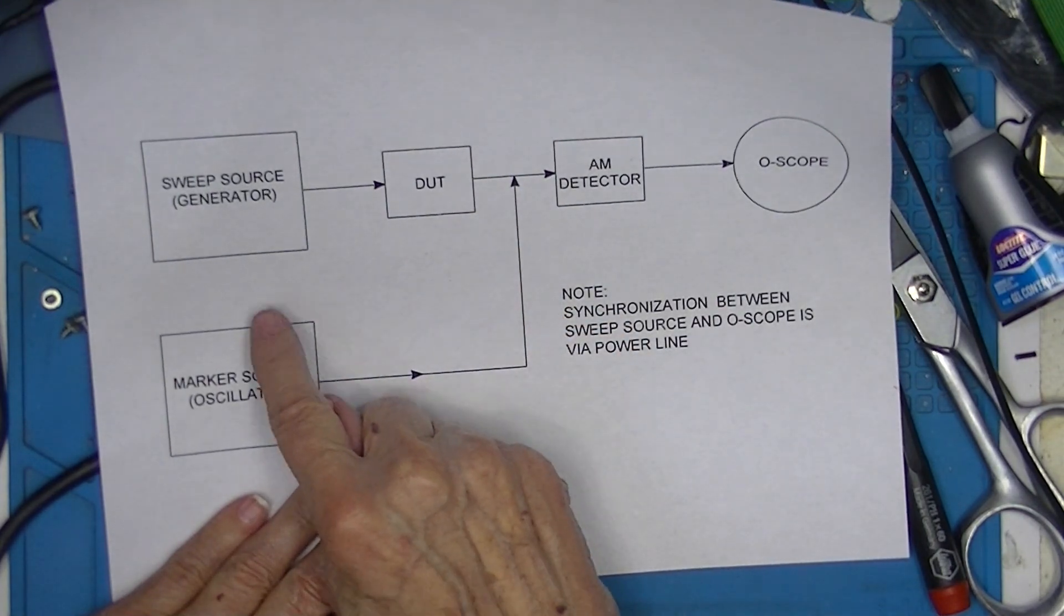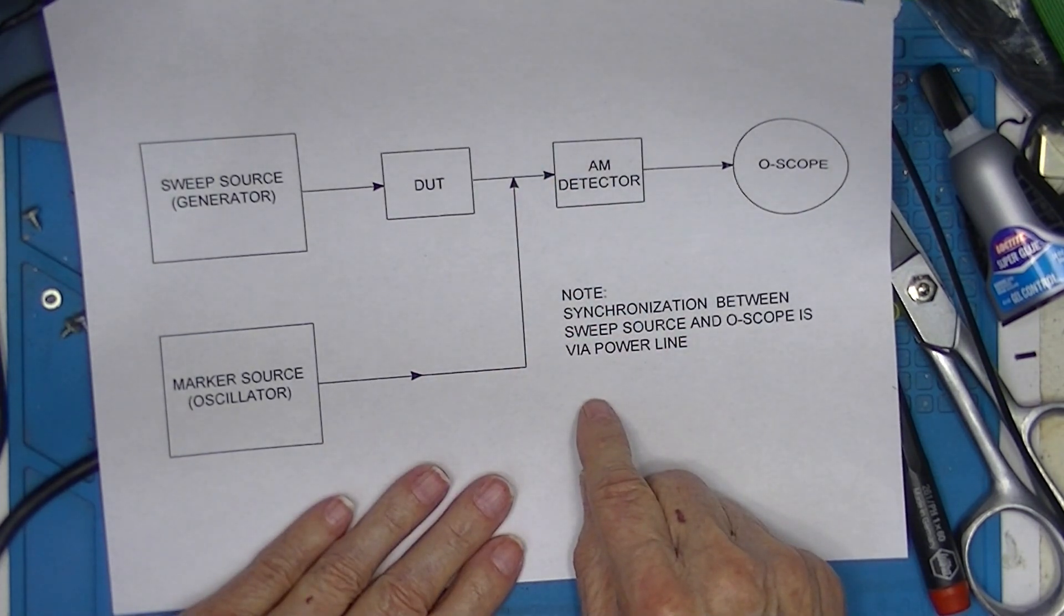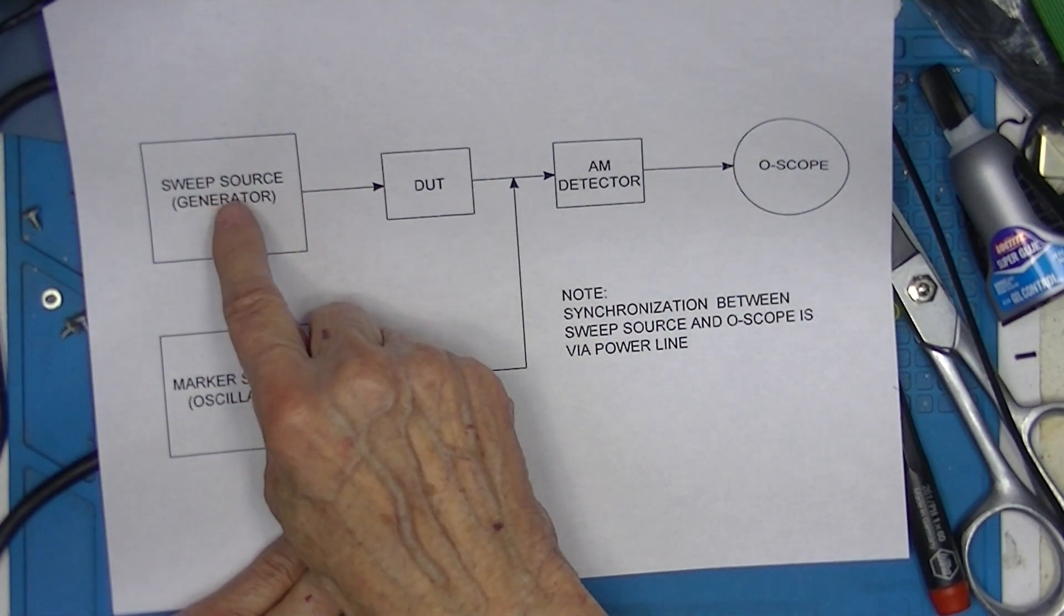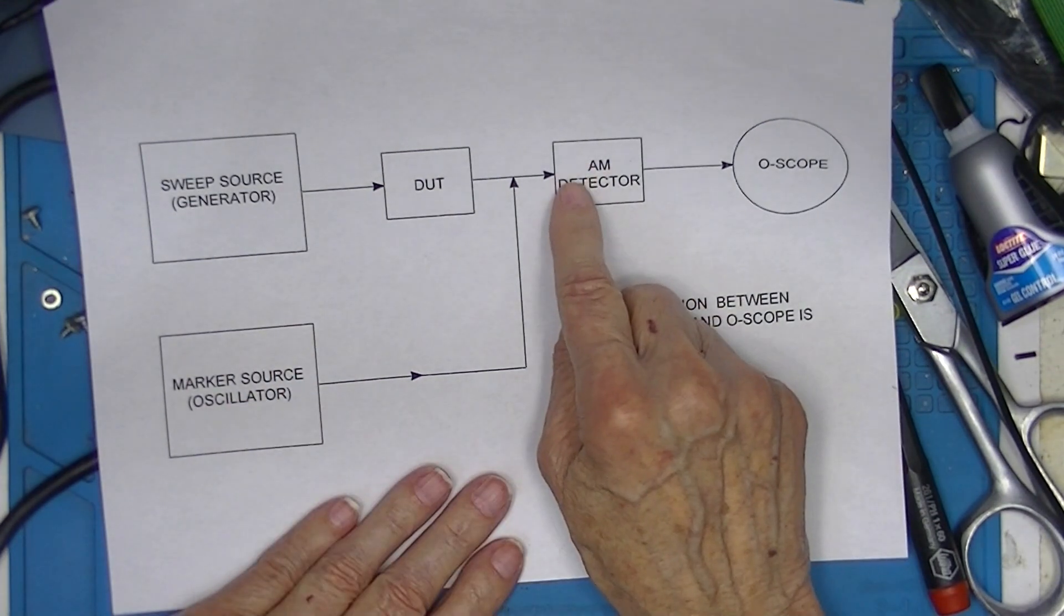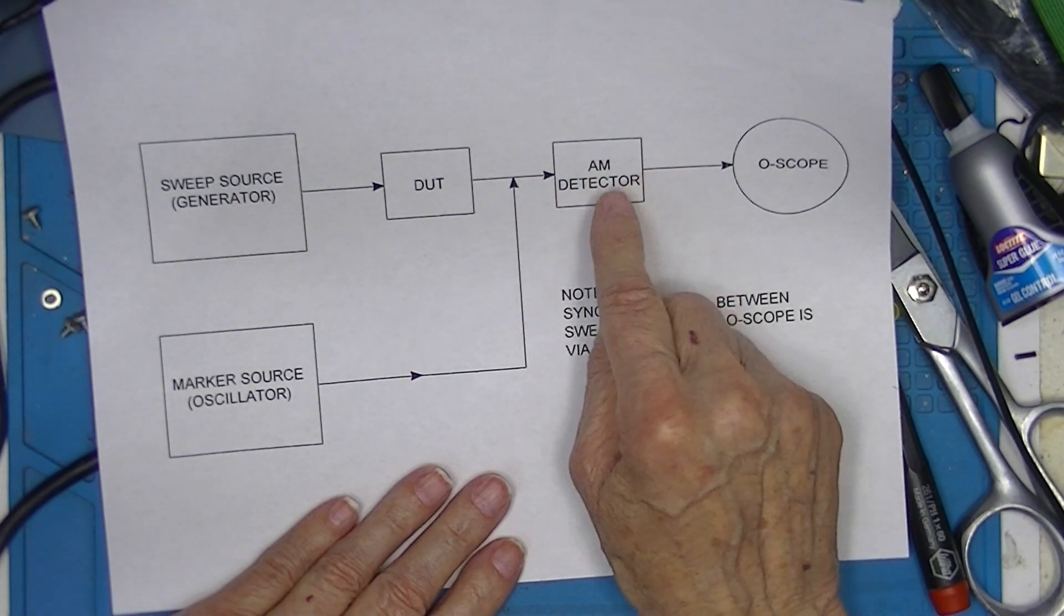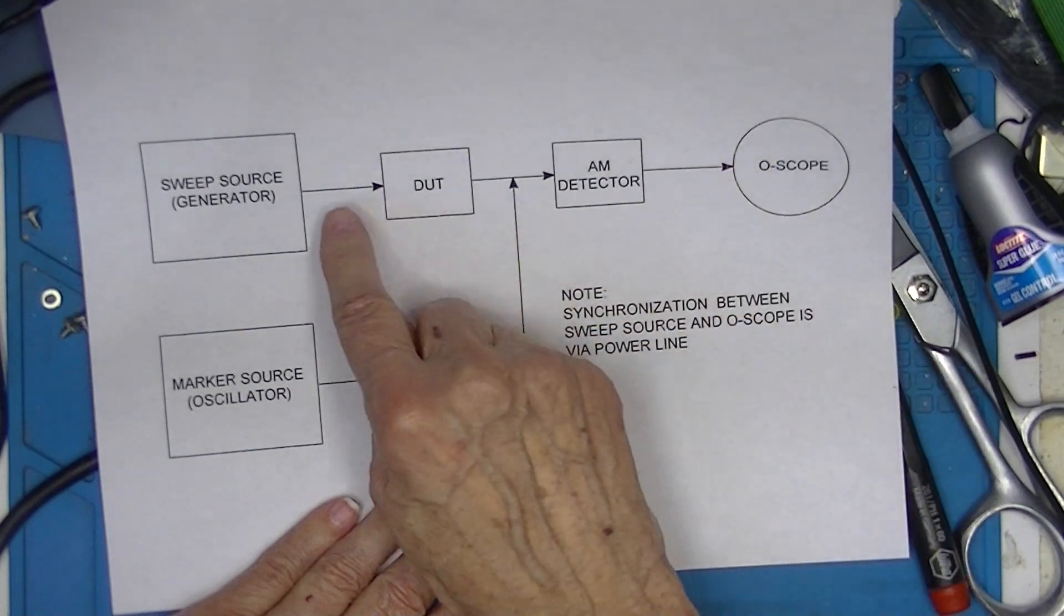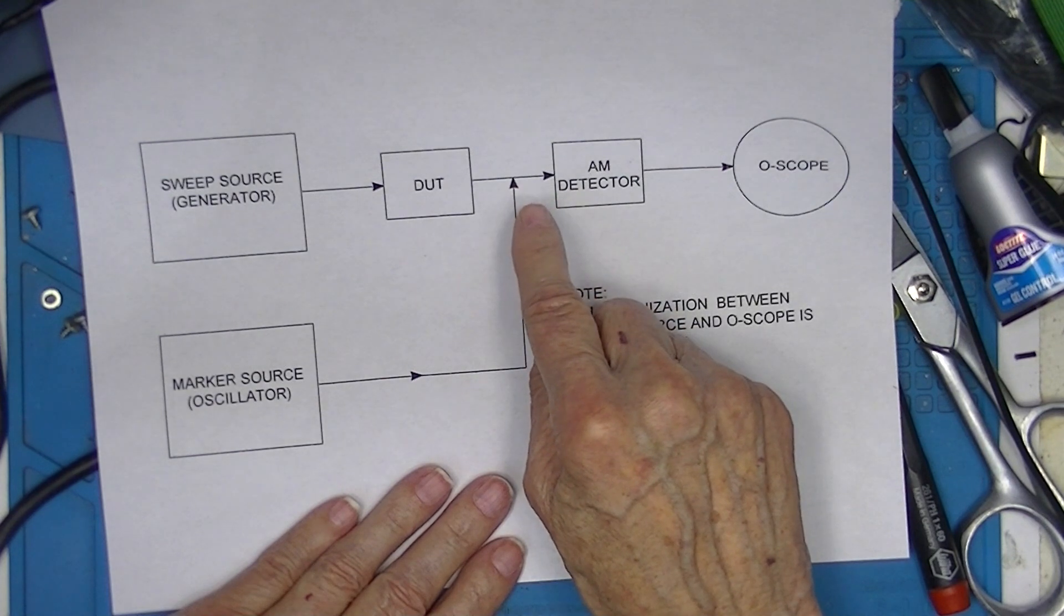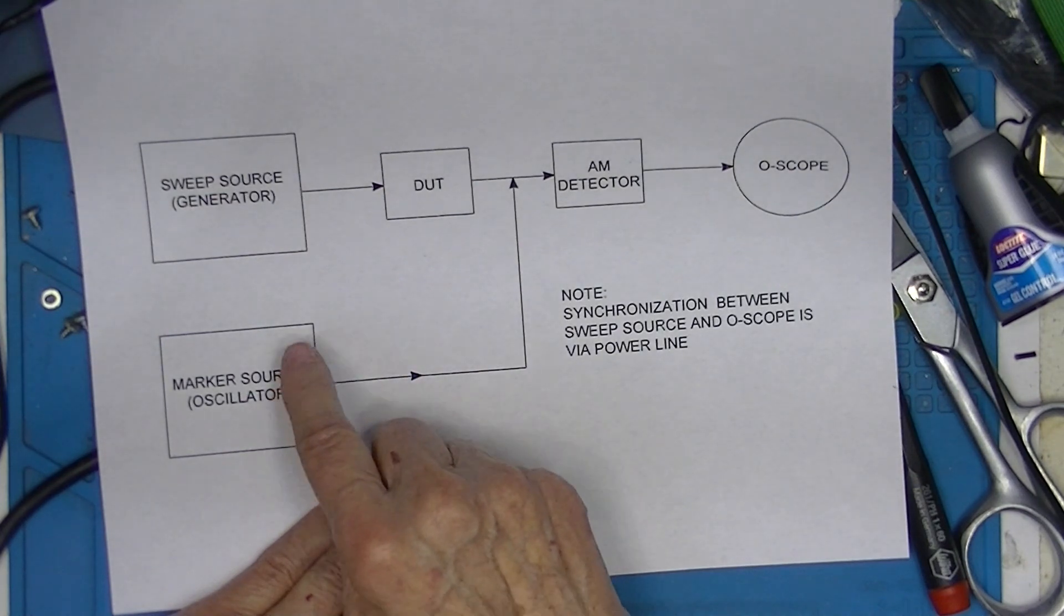Under normal operation both of these signals appear into the AM detector. Let's say that we're operating the sweep generator at a nominal 10 megahertz and the marker oscillator is at 10 megahertz. This also acts as a mixer. So at the output we get a detected modulation envelope from here and we also get at some point in the detector the sum of these two oscillators or two frequency sources and the difference.